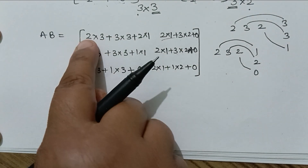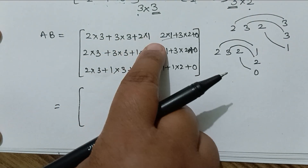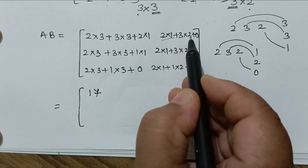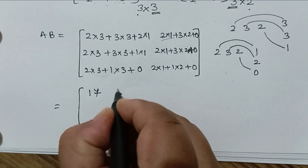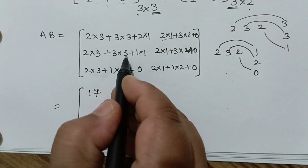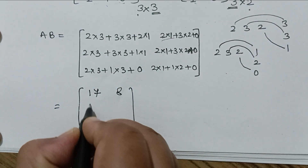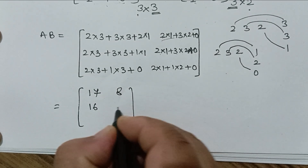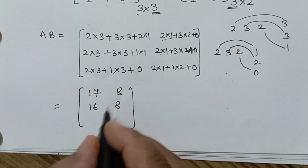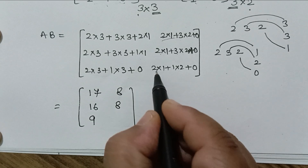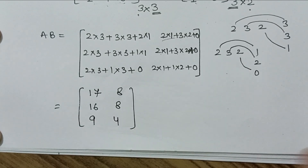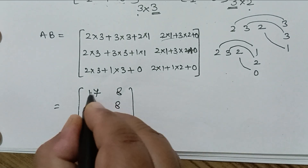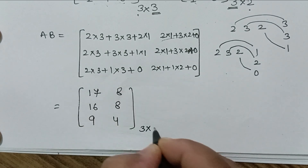Now we find the numerical values. 2x3 is 6, plus 3x3 is 9, plus 2 gives 17. Then 2x1 is 2, plus 3x2 is 6, giving 8. Next, 6 plus 9 plus 1 is 16. Then 2 plus 6 is 8. Then 6 plus 3 is 9. And 2 plus 2 is 4. The matrix AB is of order 3 rows and 2 columns.